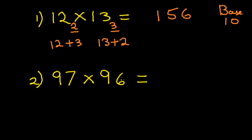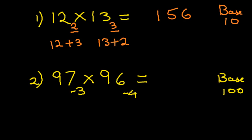Let's multiply 97 and 96. Both these numbers are closer to 100, so this time we will take the base as 100. So 97 minus 100 gives you minus 3, and 96 minus 100 gives you minus 4. Now all we have to do is multiply these two digits: 3 × 4 gives you 12. Next we add 97 and minus 4, or 96 and minus 3 — either way we will get 93. This is the answer: 9312.